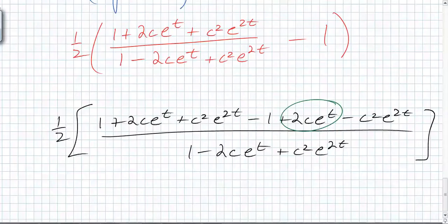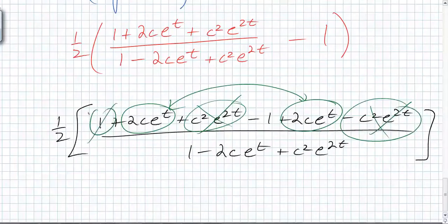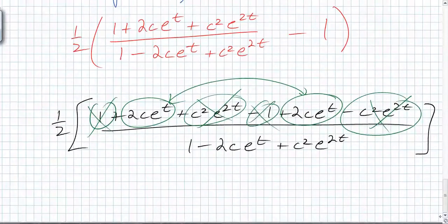Two c e to the t? They don't, but they come together though, right? What does cancel though? Kills with that. And the ones go away, right? So what are you left with?